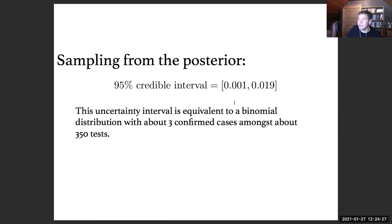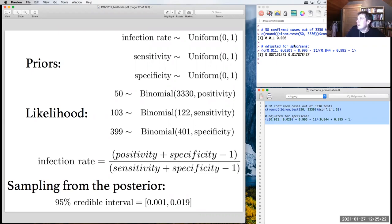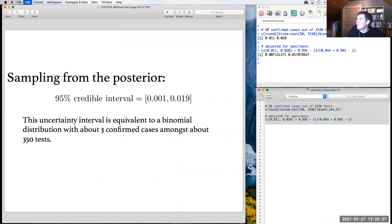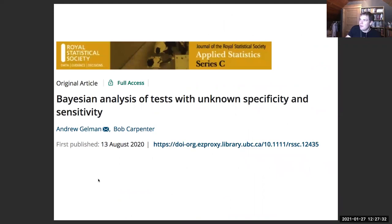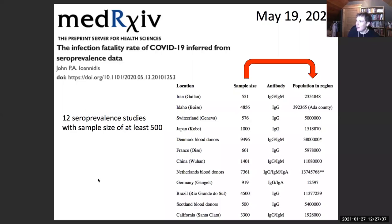Comparing the intervals: a straight binomial confidence interval gives 0.011 to 0.02; adjusting for specificity and sensitivity widens it; but the full Bayesian approach — accounting for uncertainty in those accuracy numbers themselves — widens it further still. This is the key insight highlighted in the Gelman and Carpenter paper. Many seroprevalence studies also raised concerns about whether samples were representative of the population at large.